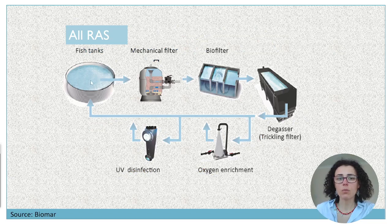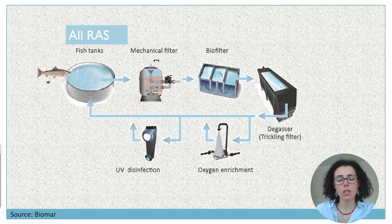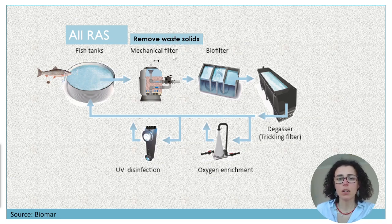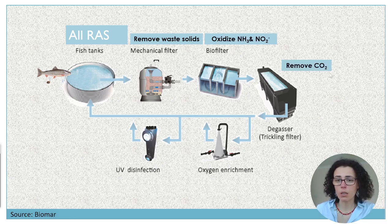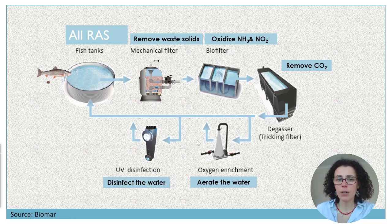This means that within the system — and that's what I was showing — these are the components of the system. You have your fish consuming oxygen, excreting carbon dioxide, ammonia, and fecal matter. Your system needs to remove the waste solids — that fecal matter and other particles. Then you need to get rid of the ammonia; ammonia is toxic, so you need the biofilter to oxidize the ammonia. Then you need to remove the carbon dioxide, and there needs to be a system to aerate the water. Your fish need that oxygen, and a system to disinfect the water. So these are the very basic components of a recirculating aquaculture system.